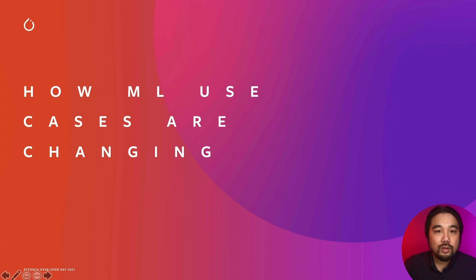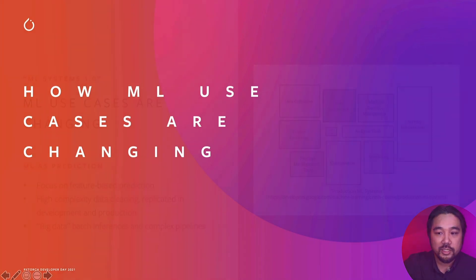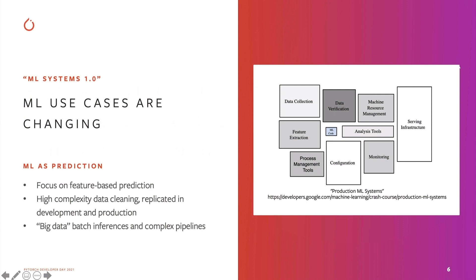How are machine learning use cases changing? In the past, when you saw discussions of machine learning systems, you always see this figure of a production ML systems discussion. It's oriented toward this idea of machine learning as a prediction engine — a focus on feature-based prediction, with complex data cleaning pipelines replicated in development and production, and machine learning as big data batch inferences going through these pipelines.